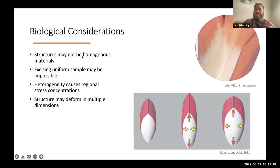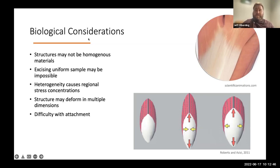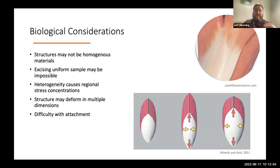It may not even be possible, depending on the tissue, to excise a uniform sample. The structural complexity may mean you can't cut out a nice dog bone shape, or it may be difficult to decide from what region to take a sample representative of the whole structure. Both of those concerns mean whatever sample you choose may have regional heterogeneity in stress concentrations and strain. Additionally, structures made of soft tissue in biology often deform in multiple dimensions in vivo, and you're faced with the decision of in which orientation to excise a sample and in what direction to apply forces. There can also be difficulties with attaching these materials to your testing rig.